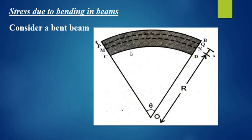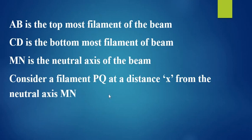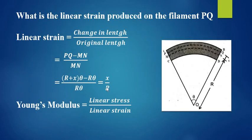Now, what is the linear strain produced on a filament PQ? Linear strain equals change in length divided by original length. It is PQ minus MN divided by MN. Here, arc length is determined by radius of curvature and the angle theta.